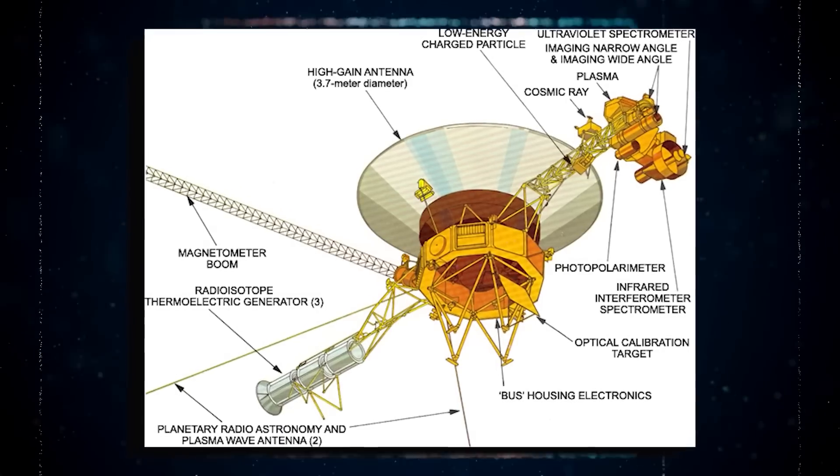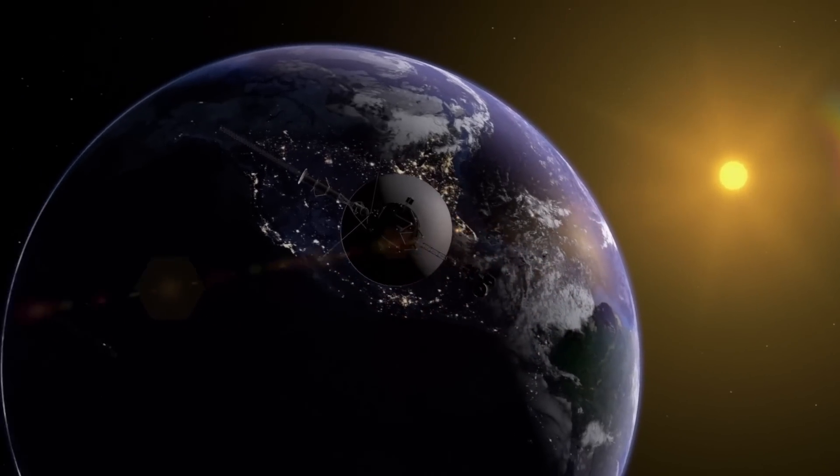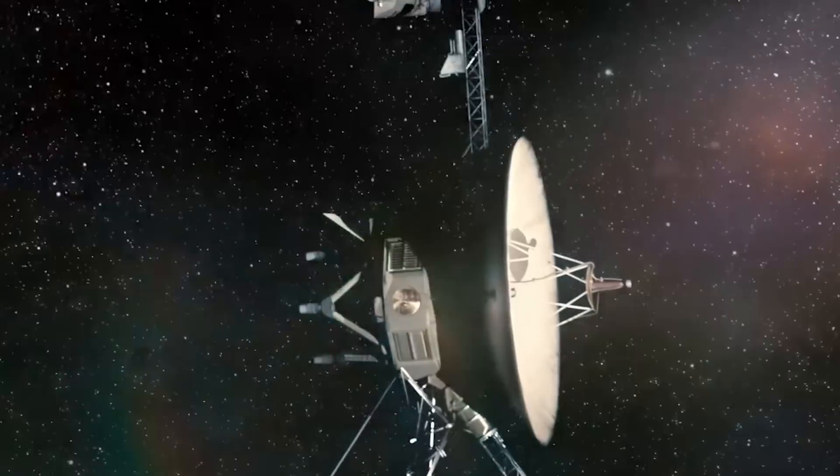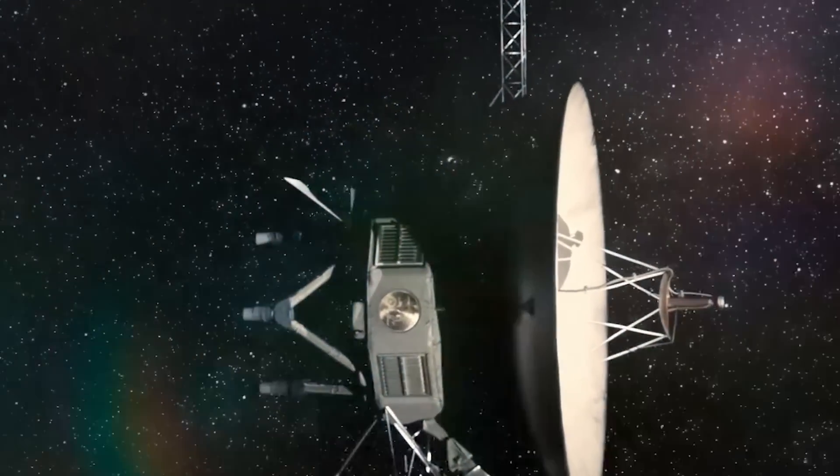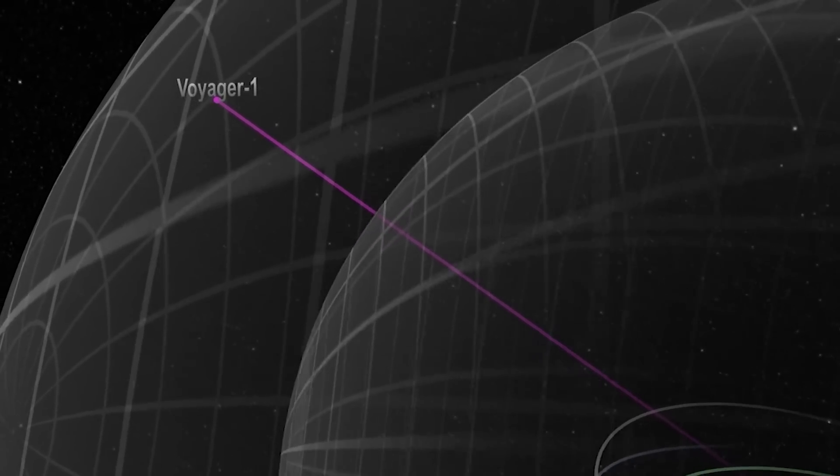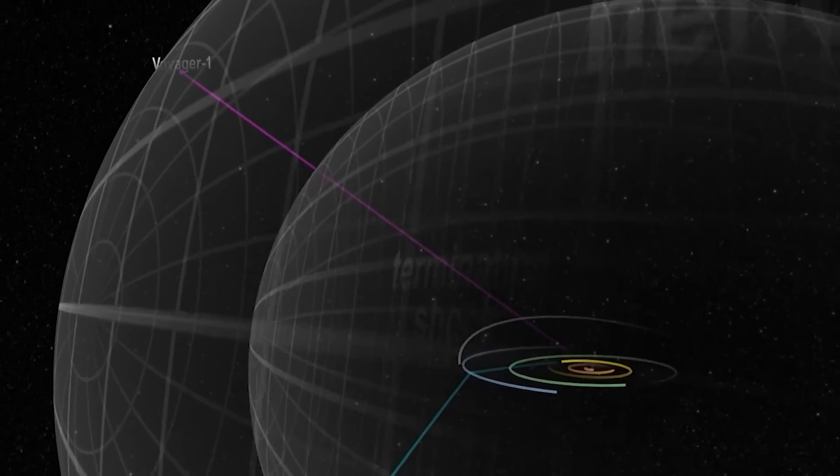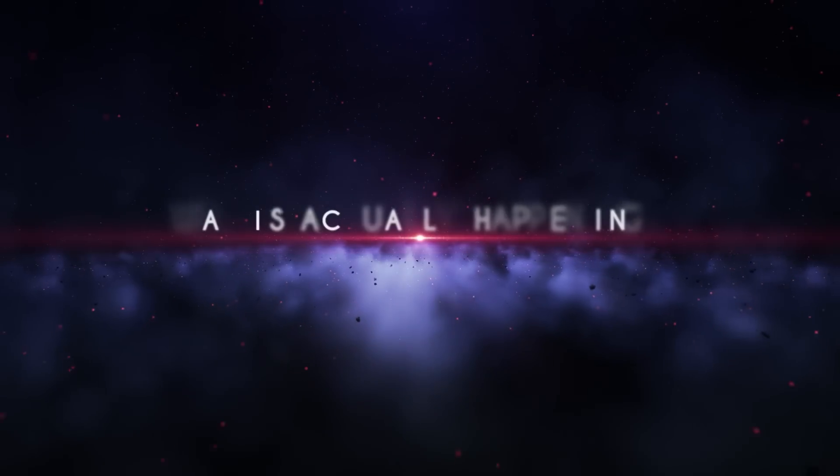Interestingly, Voyager 1's antenna, which is responsible for transmitting data back to Earth, appears to be functioning properly. Despite functioning regularly and carrying out commands from Earth, the probe's articulation and control system readings do not accurately reflect what is occurring on board. So what is actually happening?